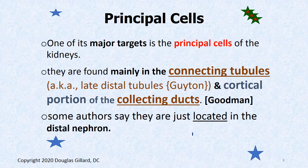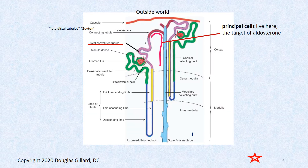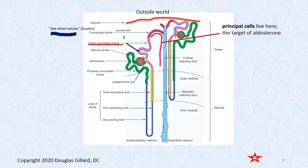So we should talk about the principal cells. They live in the cortical portion of the collecting duct, and also in the very distal part of the distal convoluted tubule. Guyton calls them the late distal tubules; other authors call them the late distal convoluted tubules or the connecting tubules.